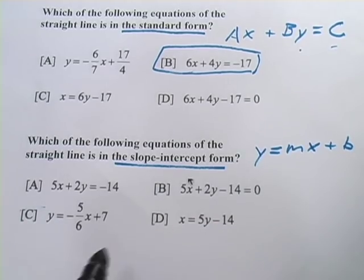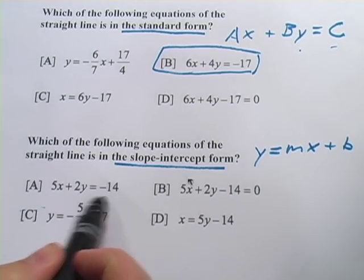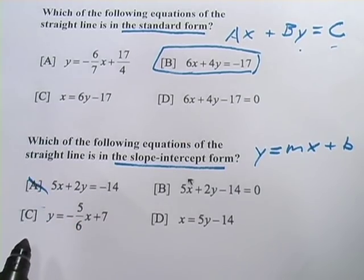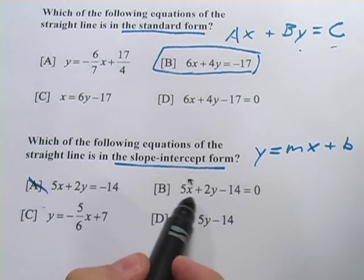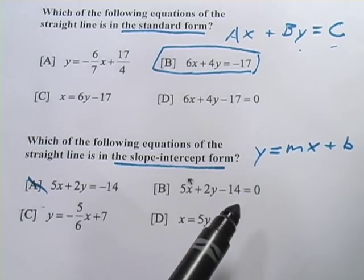So let's see which one of these fits there. Here we have the x and the y on the left and a number on the right. Well that's standard form, so that's not going to work. Here we have the x, the y, and the number all on the left. That's not going to work. We're looking for the y alone here.